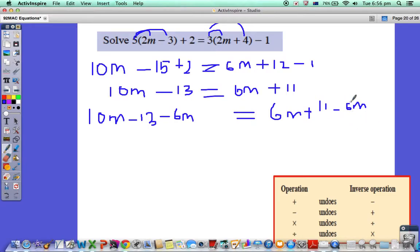So 10m minus 13 minus 6m equals 6m plus 11 minus 6m. Now that gets rid of our 6m's, but look at this—sorry, not 11, it's 13. How do I get rid of a negative 13 on this side?